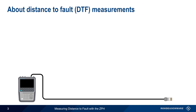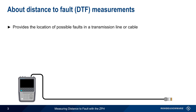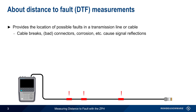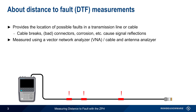Let's start with a brief overview of Distance to Fault. Distance to Fault measurements provide the location of possible faults in a transmission line or cable. These can be due to cable breaks, bad connectors, corrosion, animal chews, etc. Signal reflections will occur wherever these faults are located, and we can use a Vector Network Analyzer or Cable and Antenna Analyzer to make distance to fault measurements.